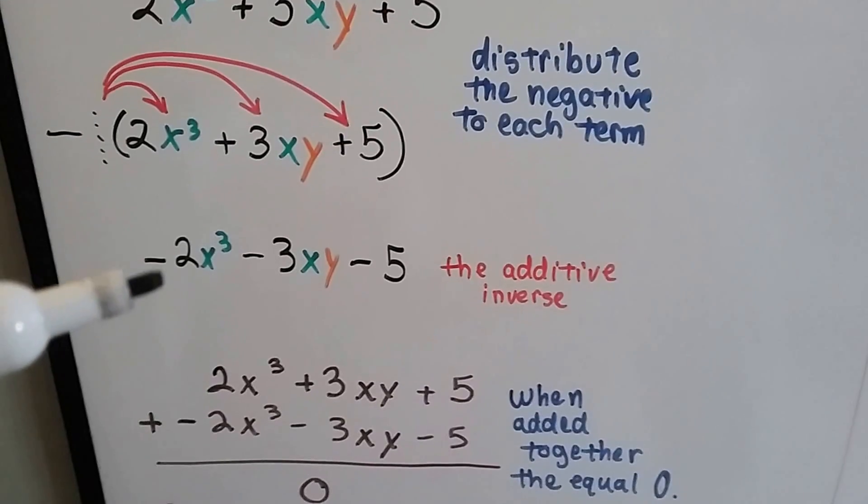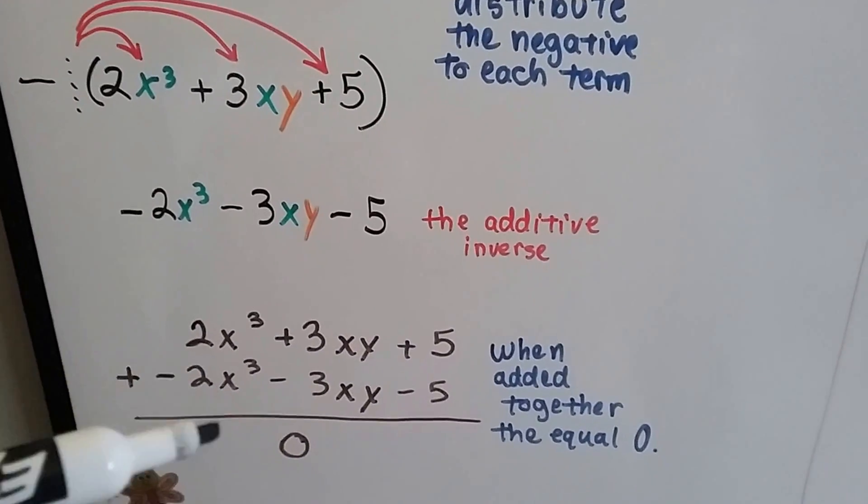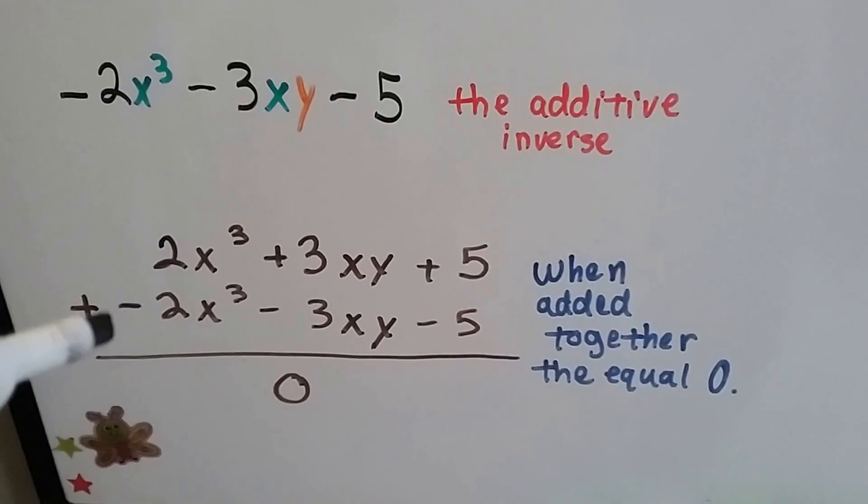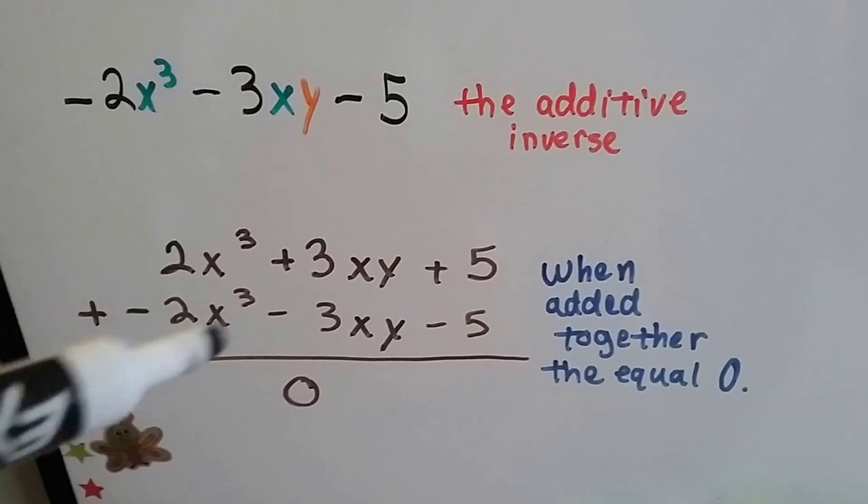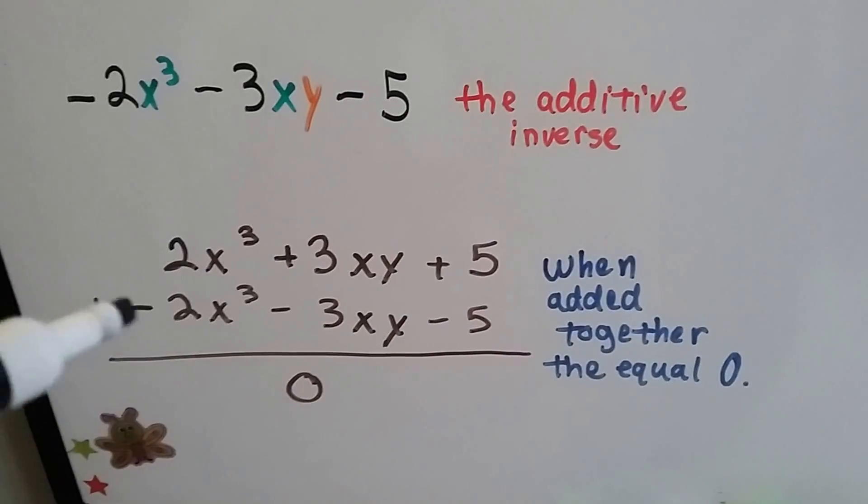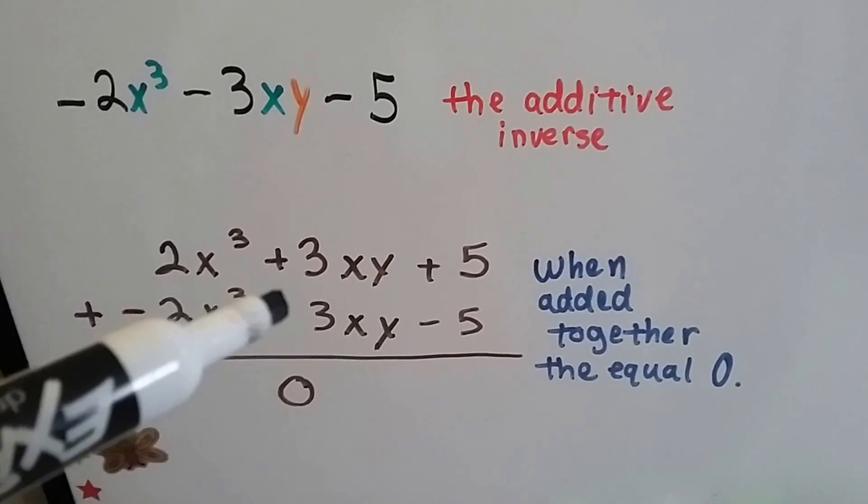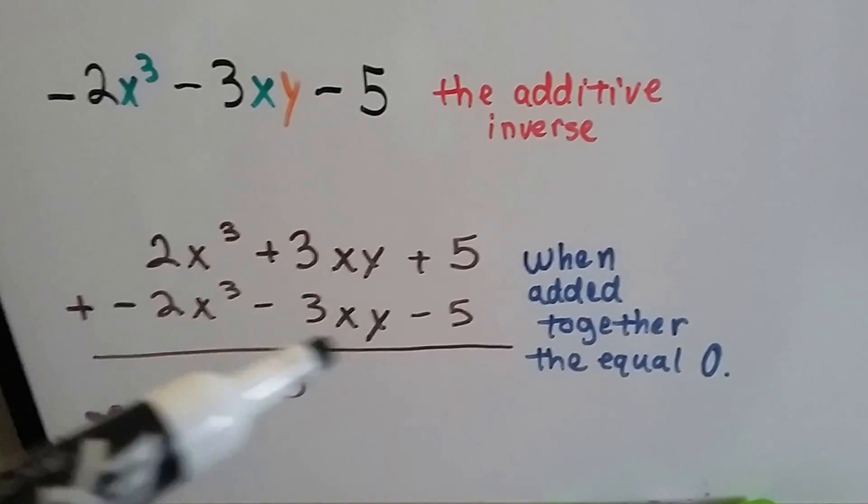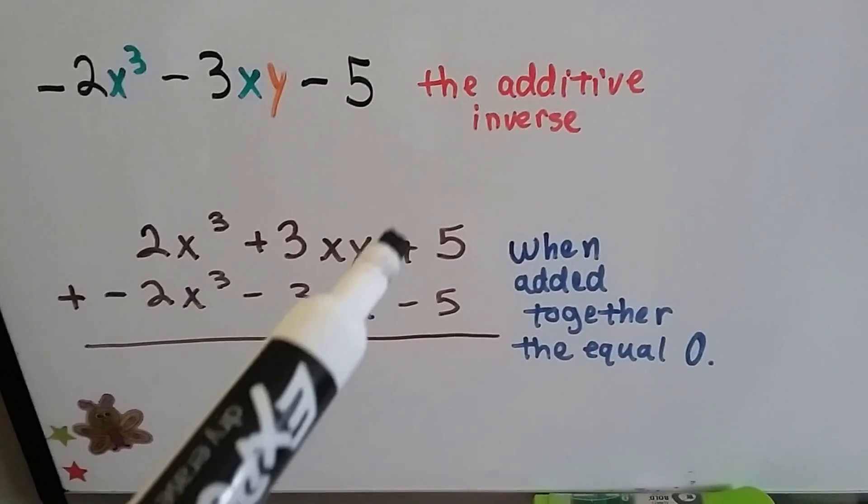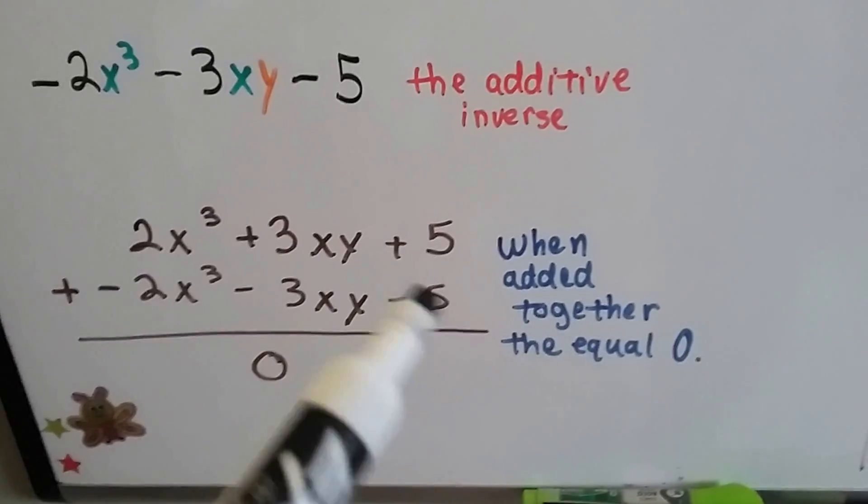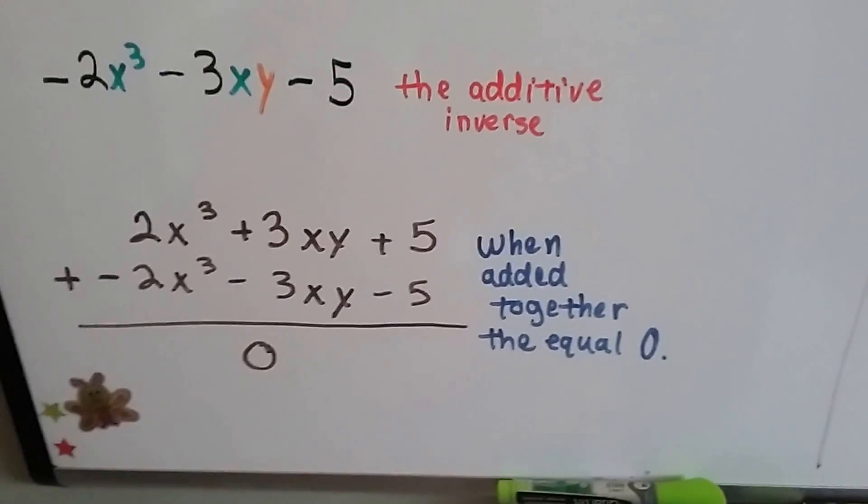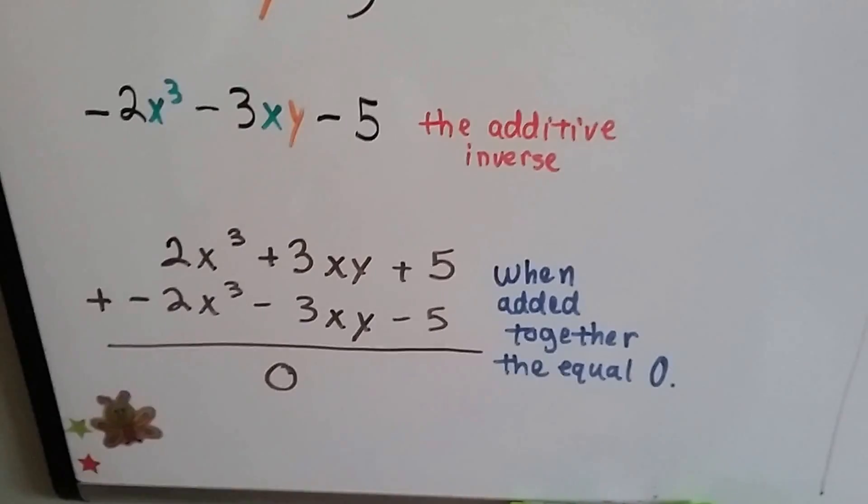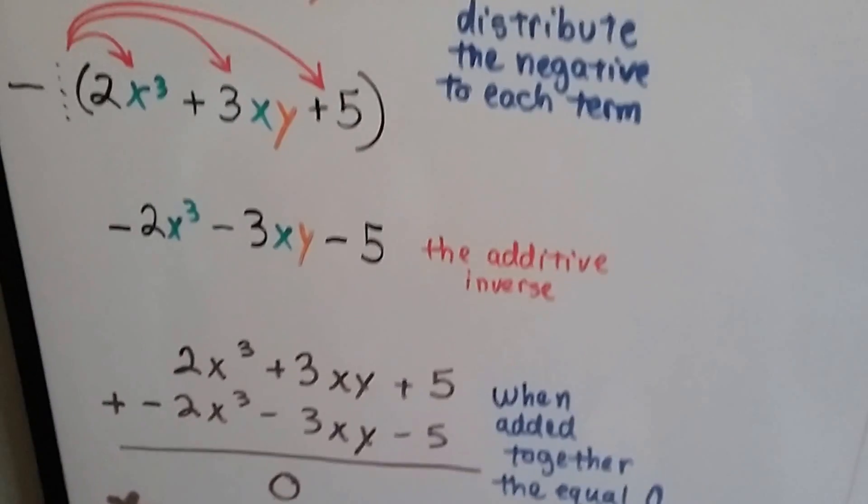If we took the first one and our additive inverse and added them together, you'd see they make zero pairs. Positive 2x to the third minus 2x to the third creates a zero pair. When you have positive 3xy and add negative 3xy, that creates a zero pair. The positive 5 minus 5 creates a zero pair. They're added together, they make zero, so we know that is the additive inverse. Signs will change, that's all, no big deal.